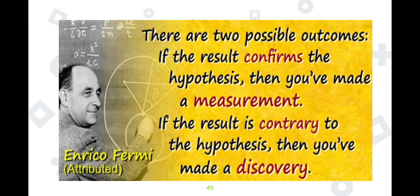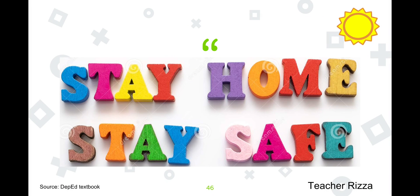That's all for today. According to Enrico Fermi: 'There are two possible outcomes — if the result confirms the hypothesis, then you've made a measurement; if the result is contrary to the hypothesis, then you've made a discovery.' This is Teacher Riza always saying, stay home and stay safe. Have a nice day. Thank you.